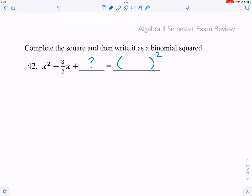Now, what we do is actually the same thing as what we did in question 41. We will divide this number by 2. Well, what is 3/2 divided by 2? Well, 3/2 divided by 2 is the same thing as 3/2 times 1/2, which is 3/4.